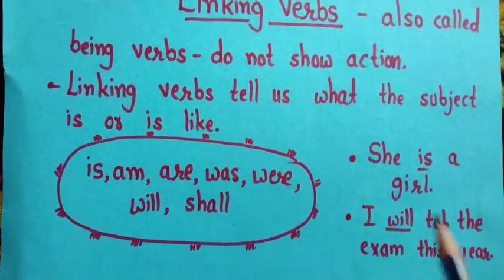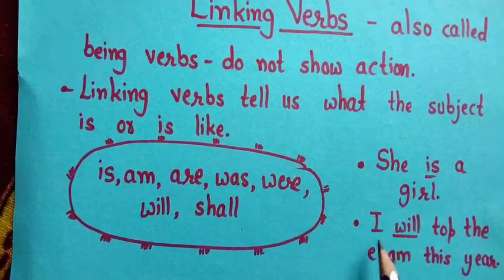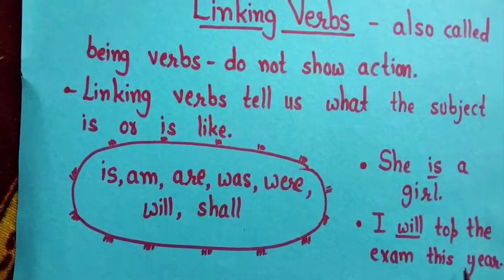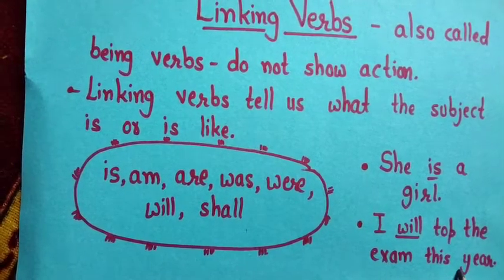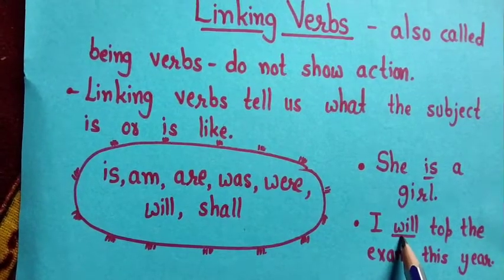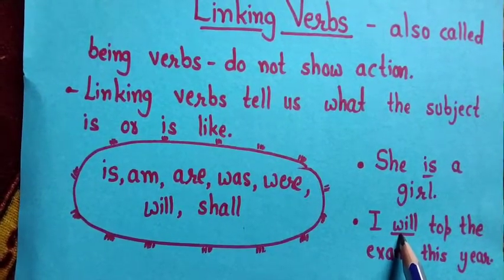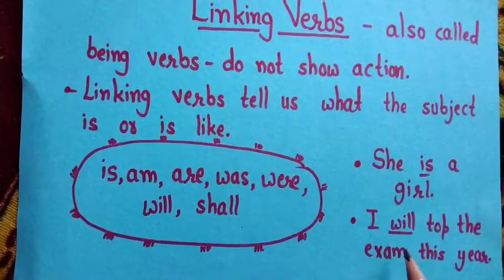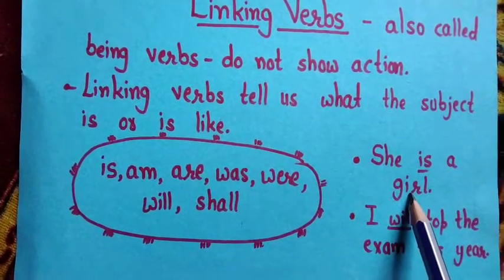Let's see examples. She is a girl. I will top the exam this year. So, in these sentences, the words 'is' and 'will' are not actions, but they are verbs. They tell us what a thing or person is.